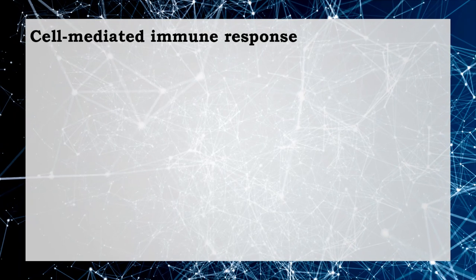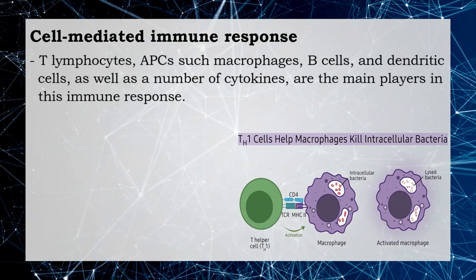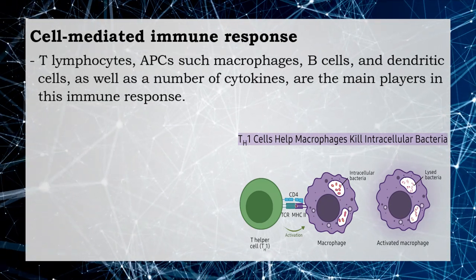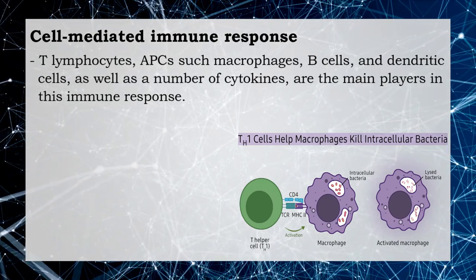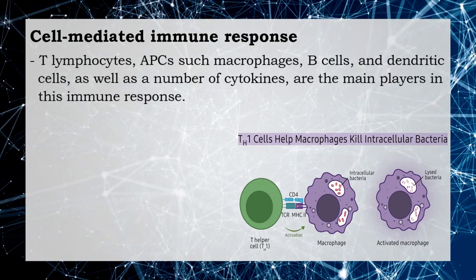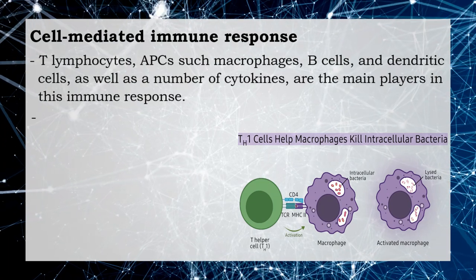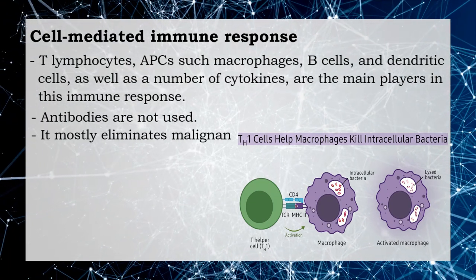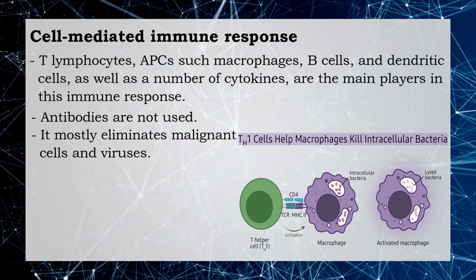In cell-mediated immune response, the main players are T lymphocytes, antigen presenting cells such as macrophages, B cells, and dendritic cells, as well as a number of cytokines. Antibodies are not used; it mostly eliminates malignant cells and viruses.